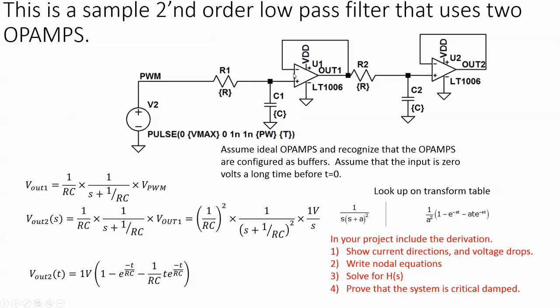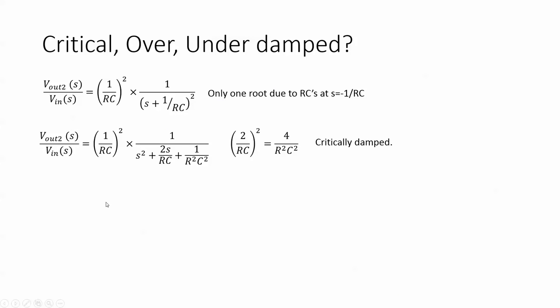This circuit you don't really need all those nodal equations. You just need to know that's a buffer, that's a buffer and then voltage division. How do you prove critical, over, or underdamped? Well you take the transfer function H(s) and notice there's only one root here so it would be critically damped. If we multiply out this characteristic equation and say that's B and that is C, well B squared equals 4 times AC and we can see it's critically damped.